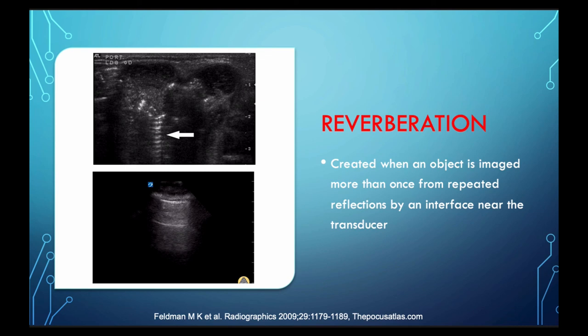Reverberation occurs at tissue interfaces with large acoustic impedance — basically very reflective surfaces, which can be bone, pleura, or air. These different things cause a lot of reflection, and what happens is that the image is then reverberated and duplicated by the machine so that you see it multiple times in the far field. On the bottom here, you see what we call A-lines — that's just a repeat image of the pleura repeating down. That's not actually part of the lung tissue; that's just a repeat image of the same pleura a couple centimeters down.